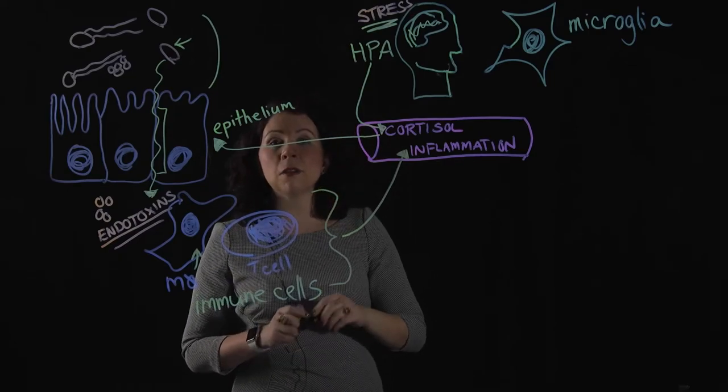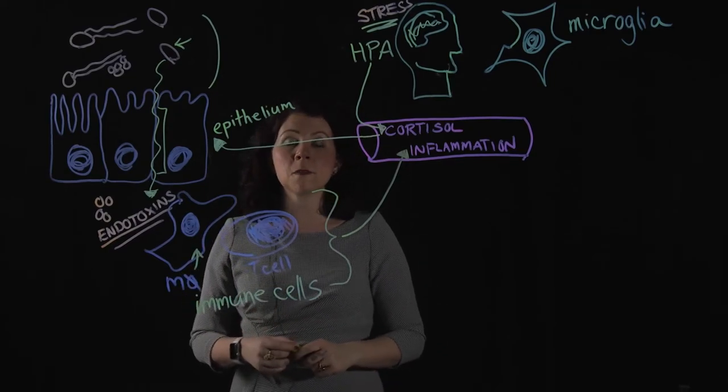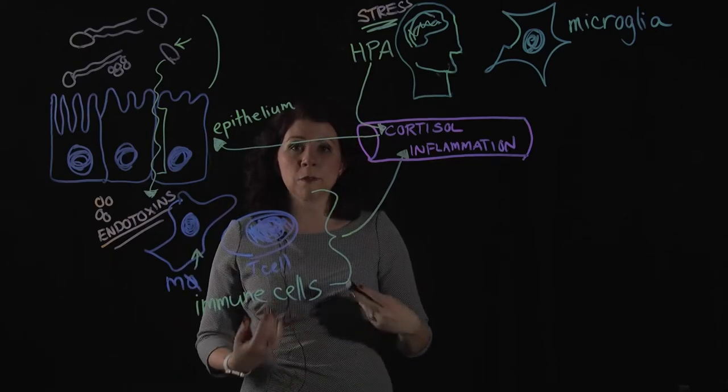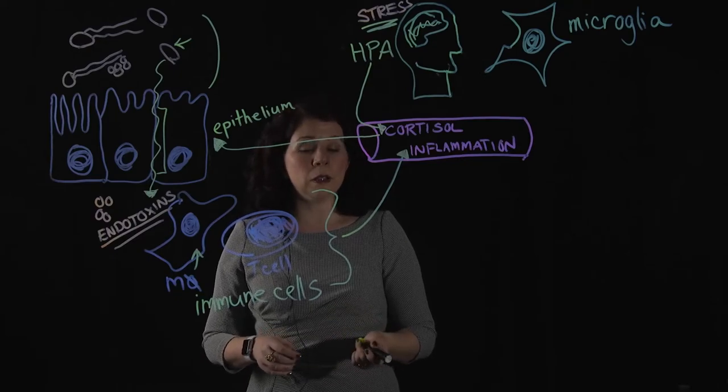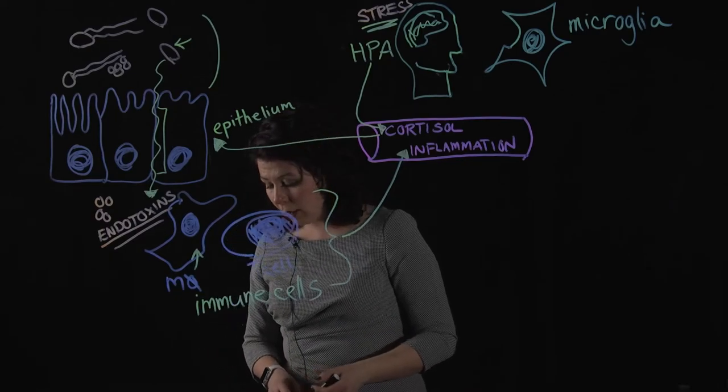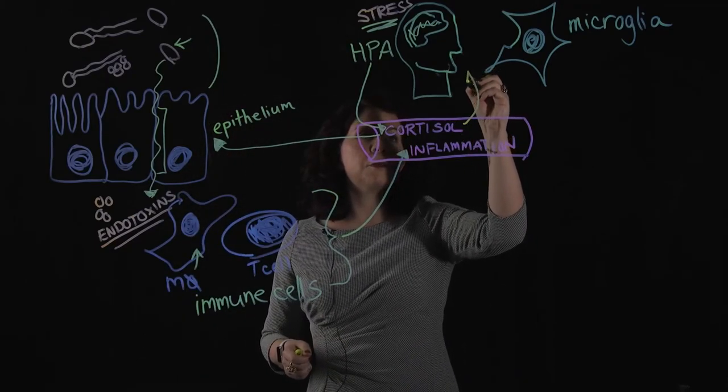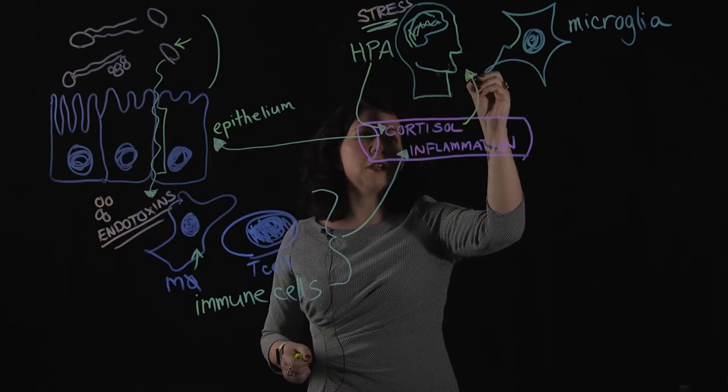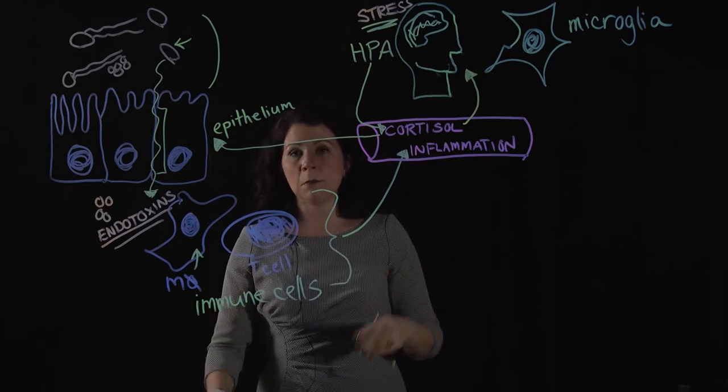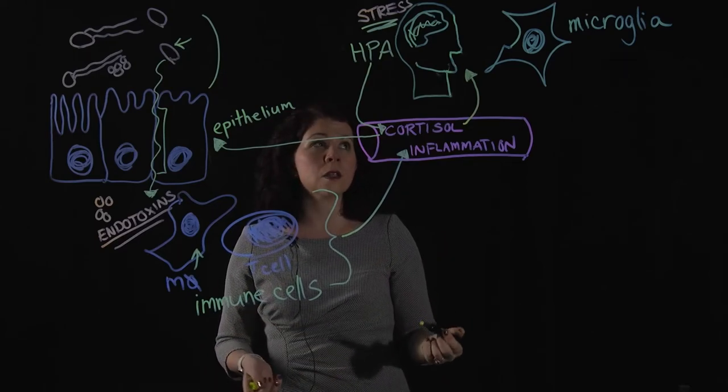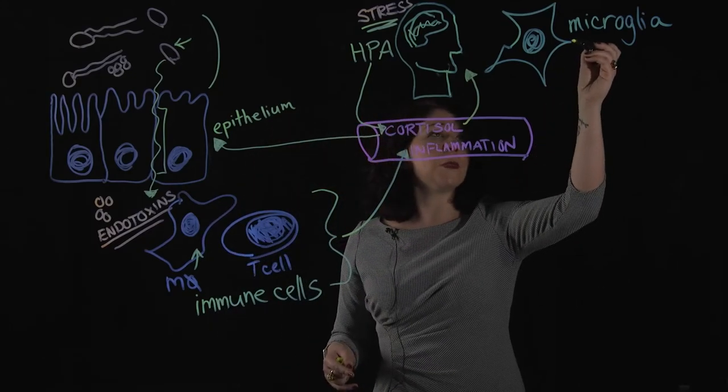So what I've shown here within our blood vessels is we are going to have our immune cells, so we have a T cell, and this is a macrophage here. And essentially what those endotoxins are going to do is stimulate these immune cells, and these immune cells are going to cause an inflammatory response. So we know that this is going to cause upregulation of some of those inflammatory cytokines. Some of those inflammatory cytokines are going to be able to get into our blood, and ultimately what happens with this inflammation is that it can travel back up into the brain.